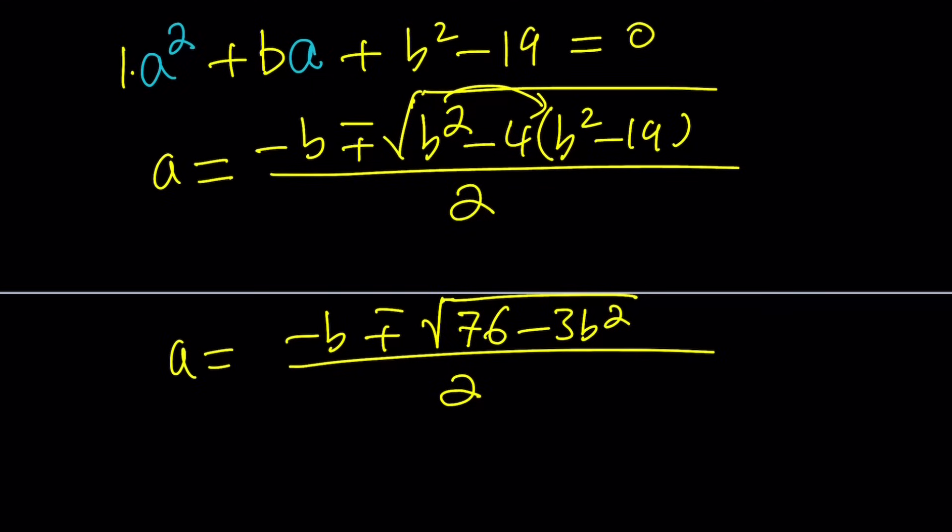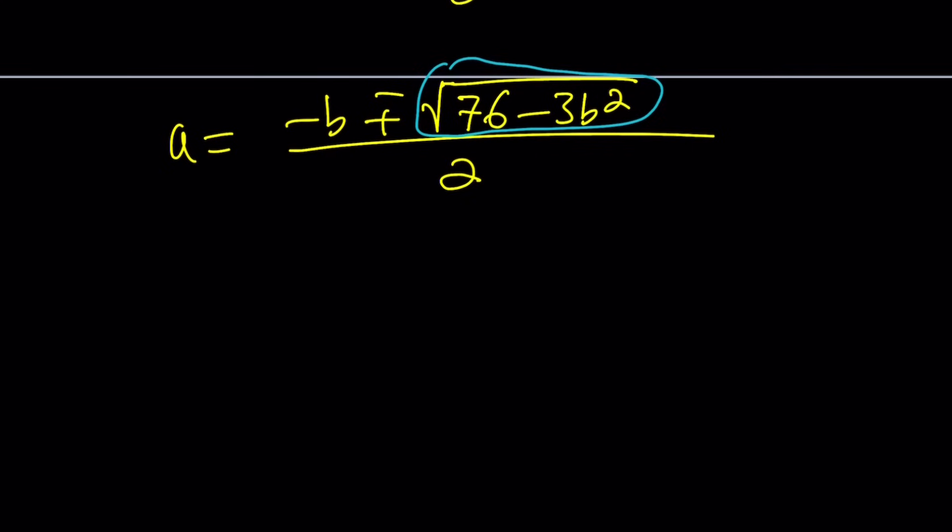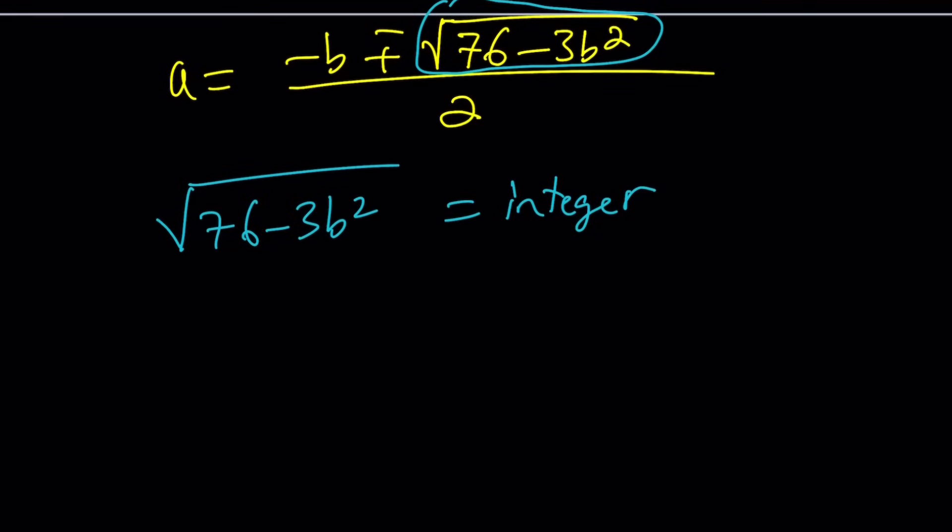We're going to do something smarter. Since a is an integer, the left-hand side is an integer, right-hand side is an integer, negative b is an integer. So the radical must be an integer. And not only that, when added to or subtracted from negative b, the sum or difference must also be divisible by 2. But we'll check that later. So let's go ahead and write the condition for this to be an integer. So this needs to be an integer. How can this be an integer?